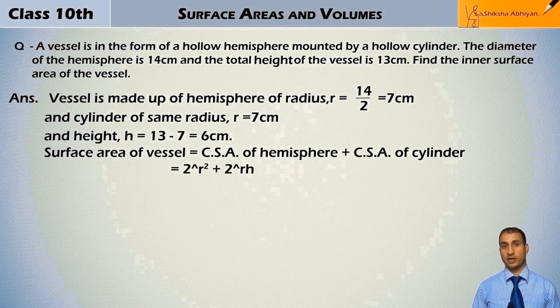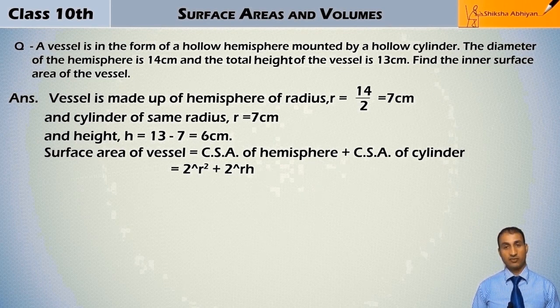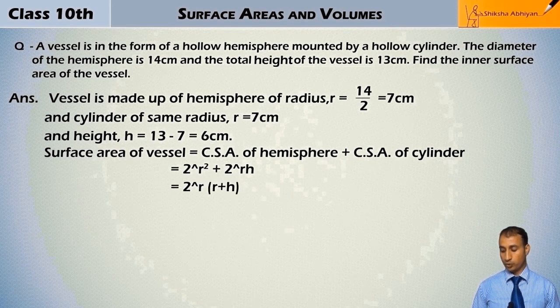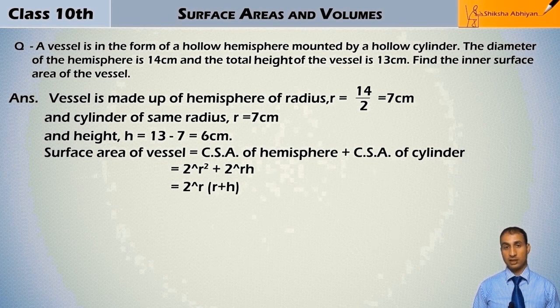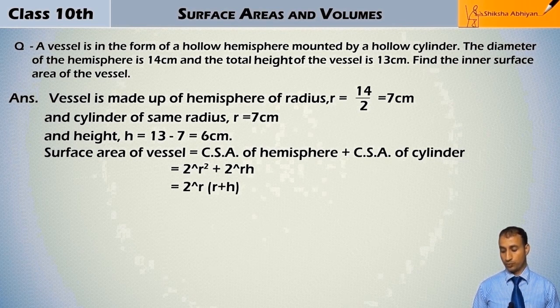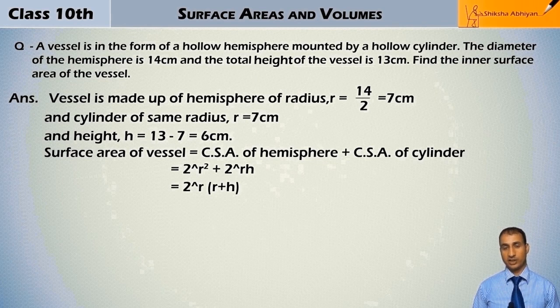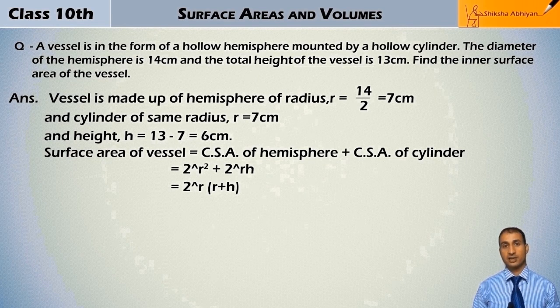This is 2πr² plus 2πrh. Here we can take 2πr common, so it becomes 2πr(r + h). Doing this makes the calculation easier.